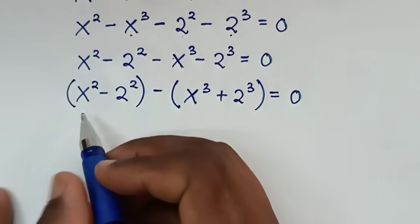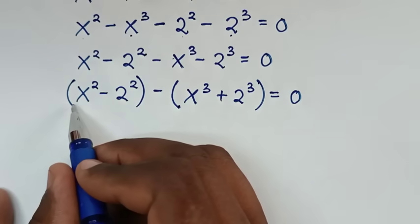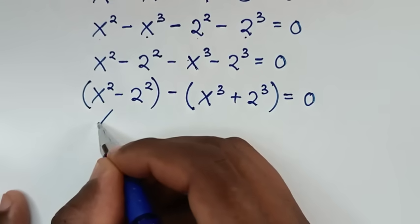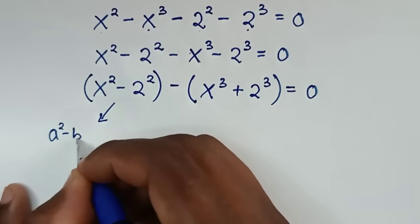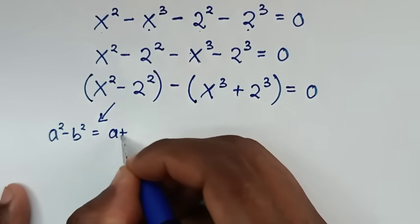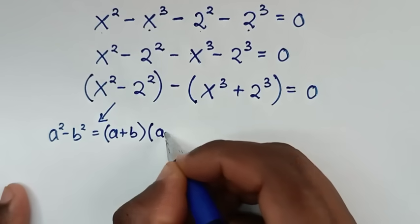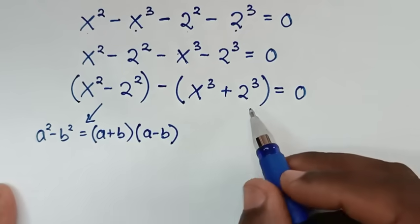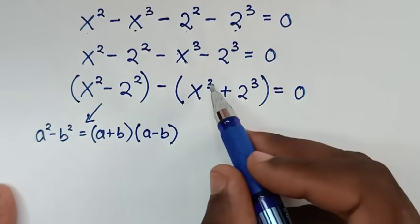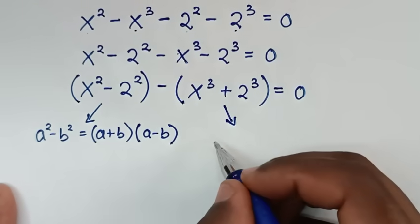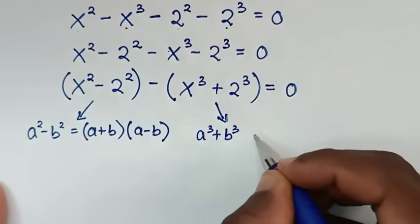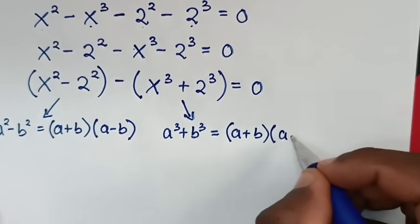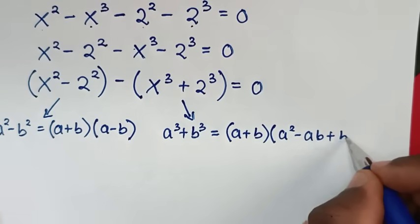Now x squared minus 2 squared is in the form of a difference of squares, so we apply the rule: a squared minus b squared equals (a plus b)(a minus b). And x cubed plus 2 cubed is in the form of a sum of cubes, so we apply the rule: a cubed plus b cubed equals (a plus b)(a squared minus ab plus b squared).